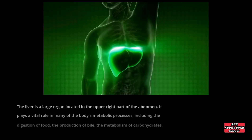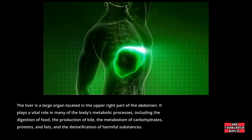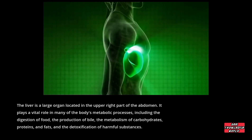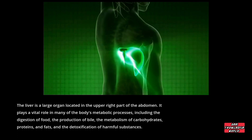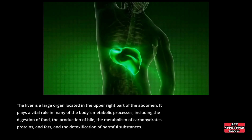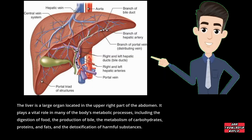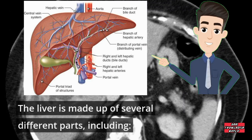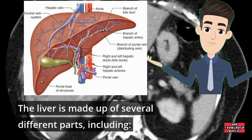The liver is a large organ located in the upper right part of the abdomen. It plays a vital role in many of the body's metabolic processes, including the digestion of food, the production of bile, the metabolism of carbohydrates, proteins, and fats, and the detoxification of harmful substances.